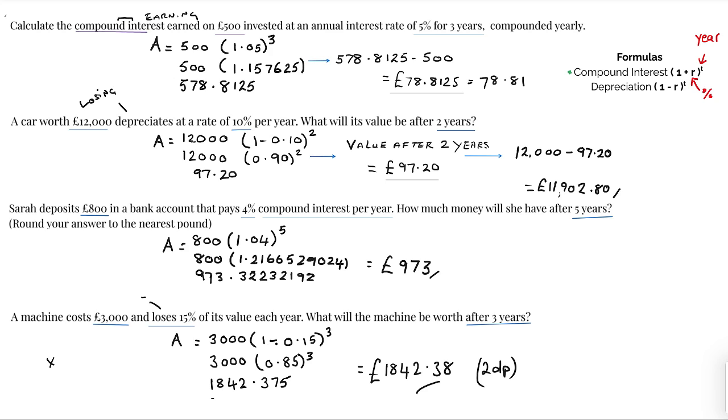So the amount equals three thousand, right, one minus 0.15 to the power of three. Just sort this out: 0.85. I know that but you may need to put that in the calculator, and then you plug it all into the calculator and 1842.375 will come up.